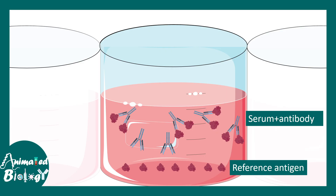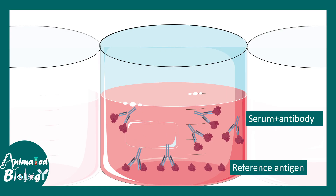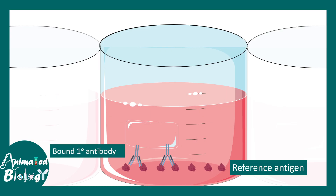Then we add the serum and antibody mixture, and this is where competitive ELISA differs from other ELISAs — here we incubate with the antibody first and then add the serum. In the serum-plus-antibody fraction, there would be bound and unbound antibodies. The bound antibodies cannot bind to the reference antigens because they are already preoccupied. The unbound antibodies will go and bind to the reference antigens. After a wash, the unbound fractions are removed and the primary antibody remains bound to the reference antigen in the well of the ELISA plate.